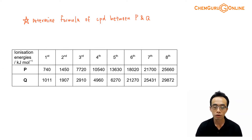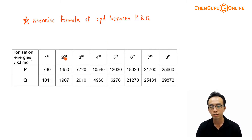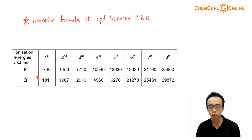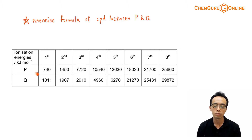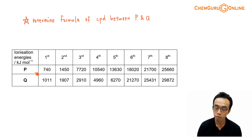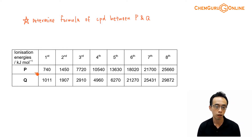Now what we want to determine is, given this data involving successive ionization energy for two elements, P and Q, we want to determine what is the formula of this compound between P and Q. If P and Q were to form a compound, then what would the formula be like?